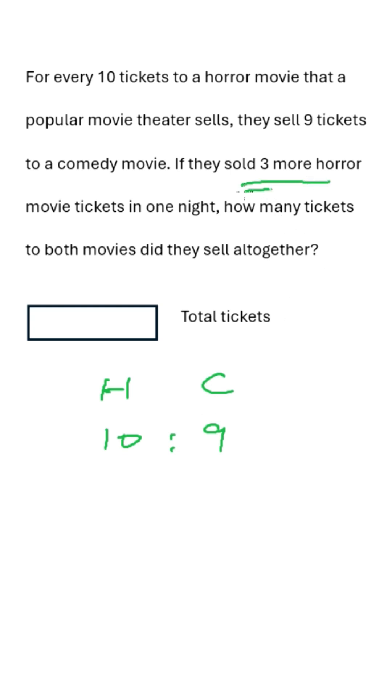If they sold 3 more horror movie tickets in one night, how many tickets to both movies did they sell altogether? Now here they are saying 3 more, but we can see in the ratio there is 1 more only. So if we add 10 more horror movies, we have to add 9 more comedy movies against it, because 10 to 9 is the ratio.